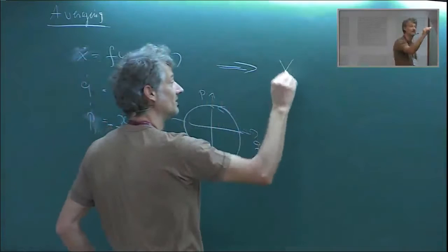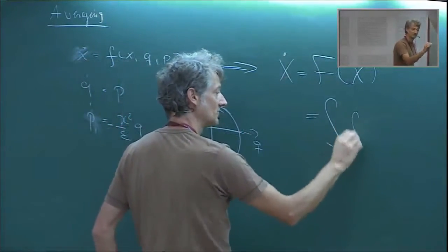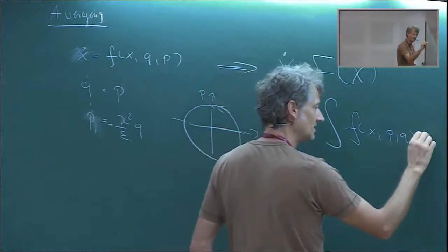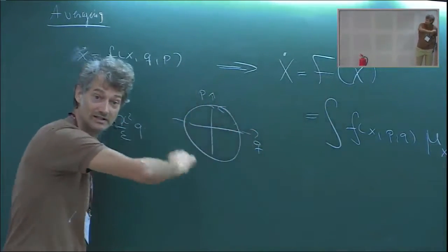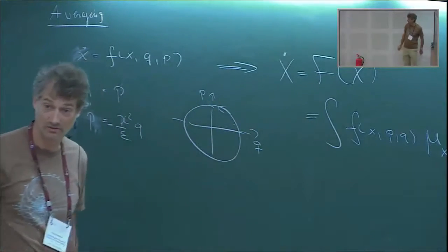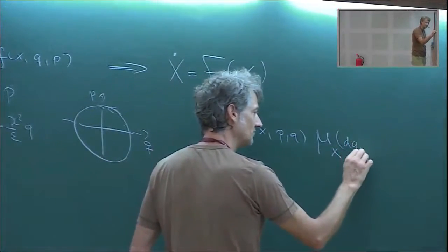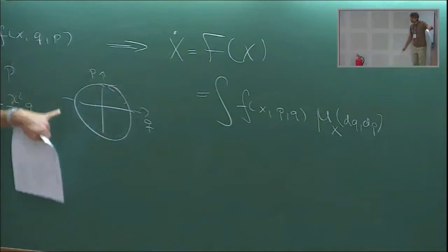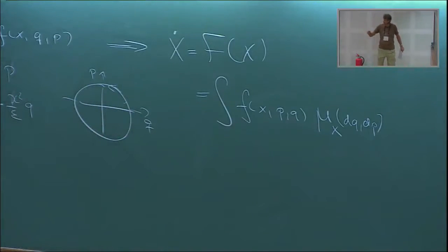What we ended up with was ẋ = F̄(x), which is just f(x, p, q) averaged over the invariant measure conditioned on x — because the frequency, how we go around, depends on x. We write this as dq and dp. For this linear oscillator it's quite easy to find this invariant measure; it's the delta measure on that circle. But let's say we don't know what this measure is and can't solve the equation explicitly.